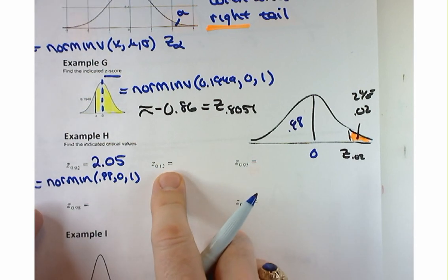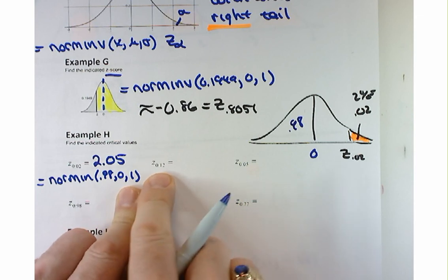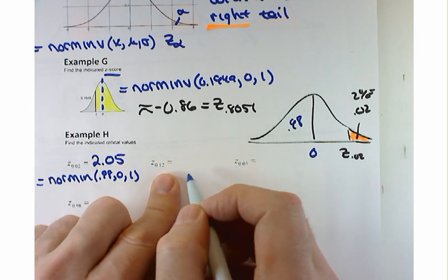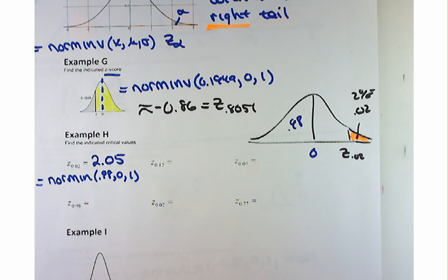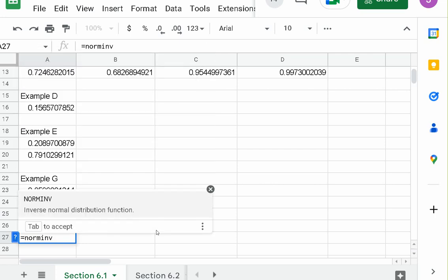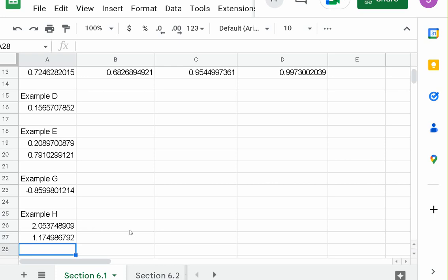Let's try Z sub 0.12 — kind of the same thing as the last one. We're trying to find the area to be 12% in the right tail. Equals norm inverse of 0.88, comma 0, comma 1. And we get about 1.1749. So rounded to the nearest hundredth, that would be about 1.17.